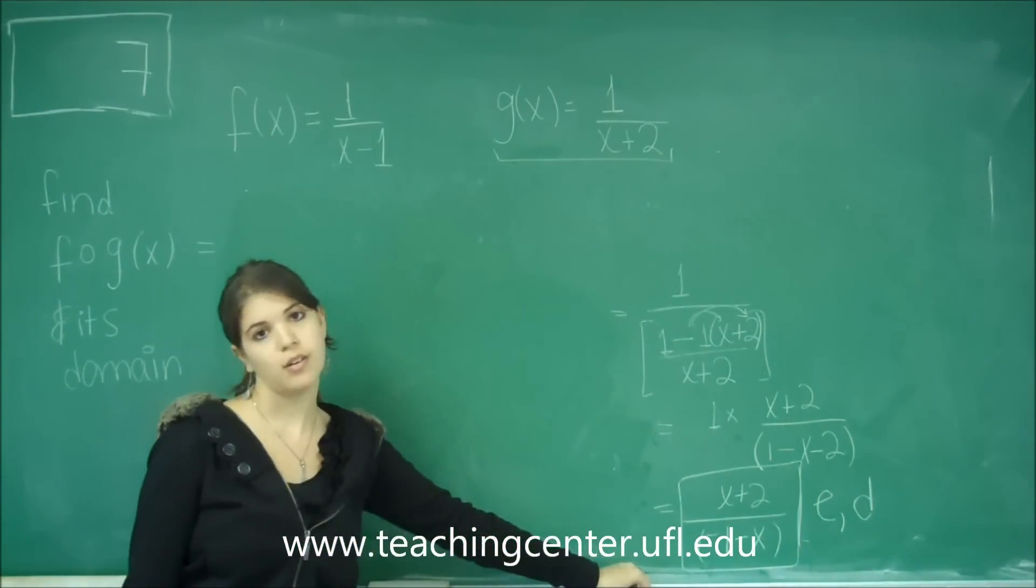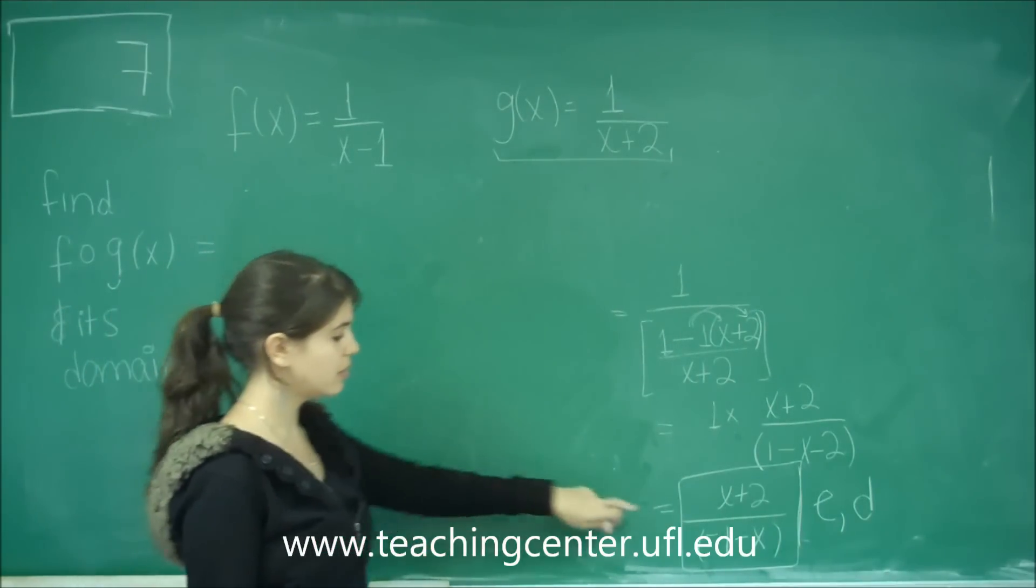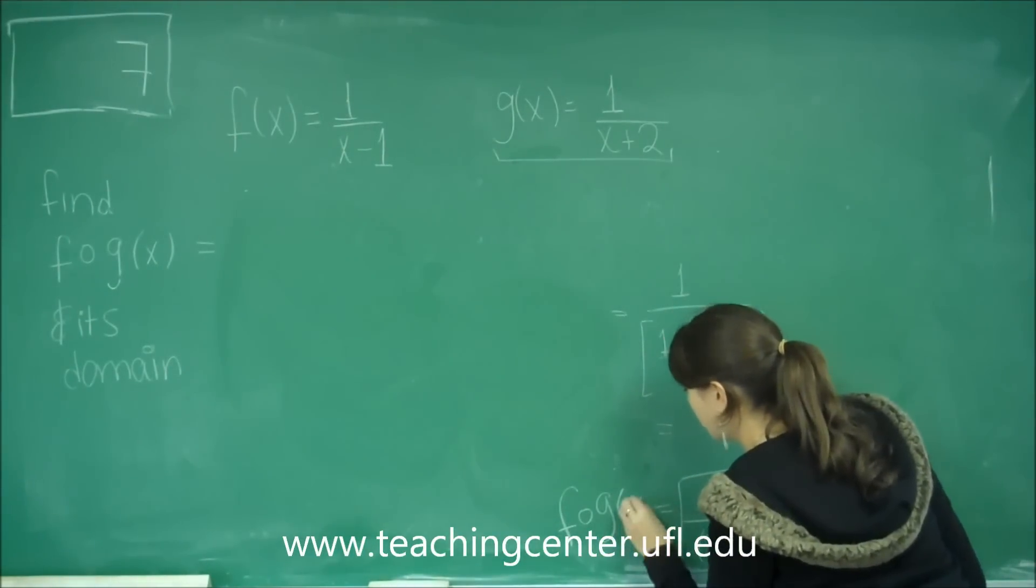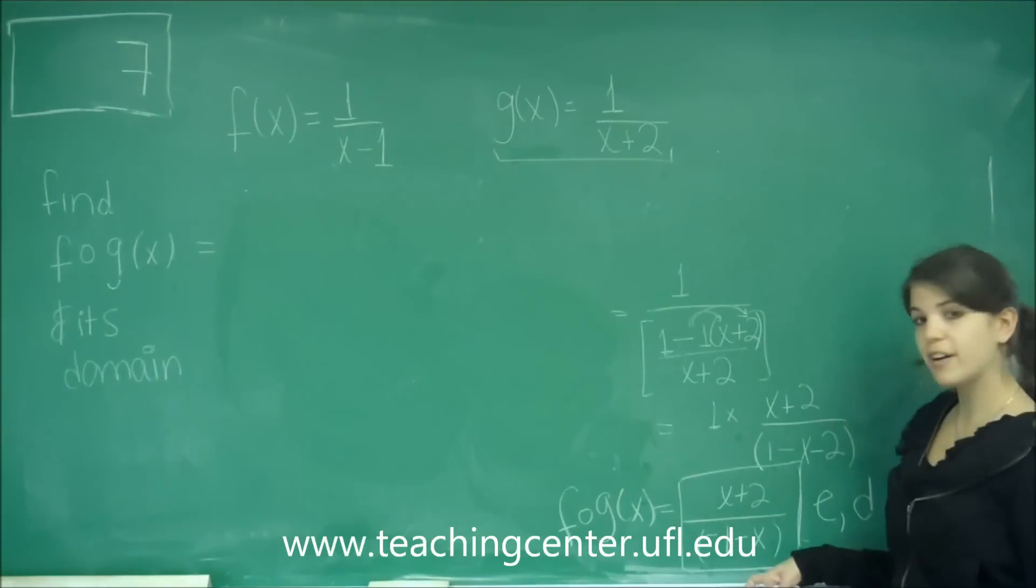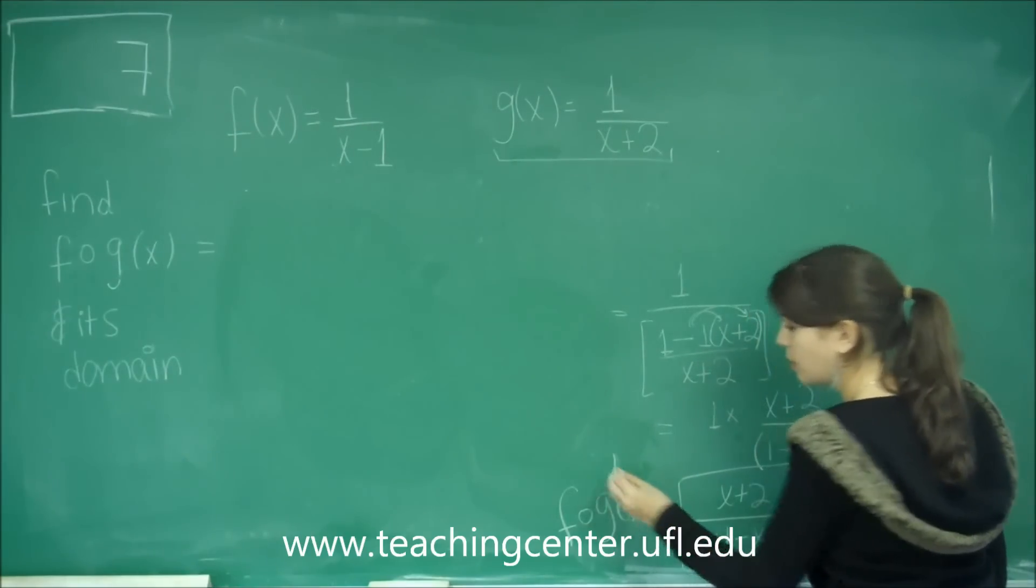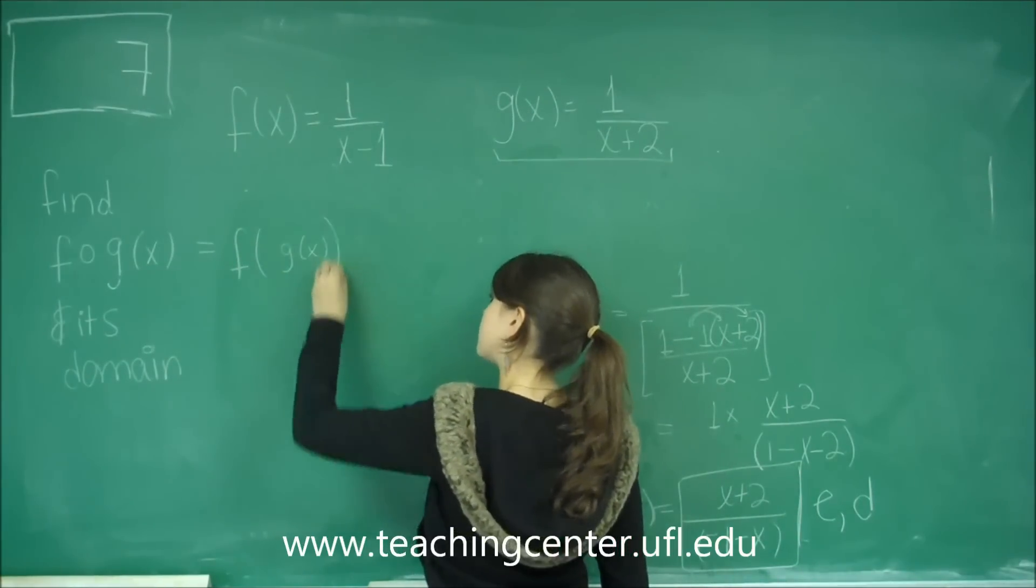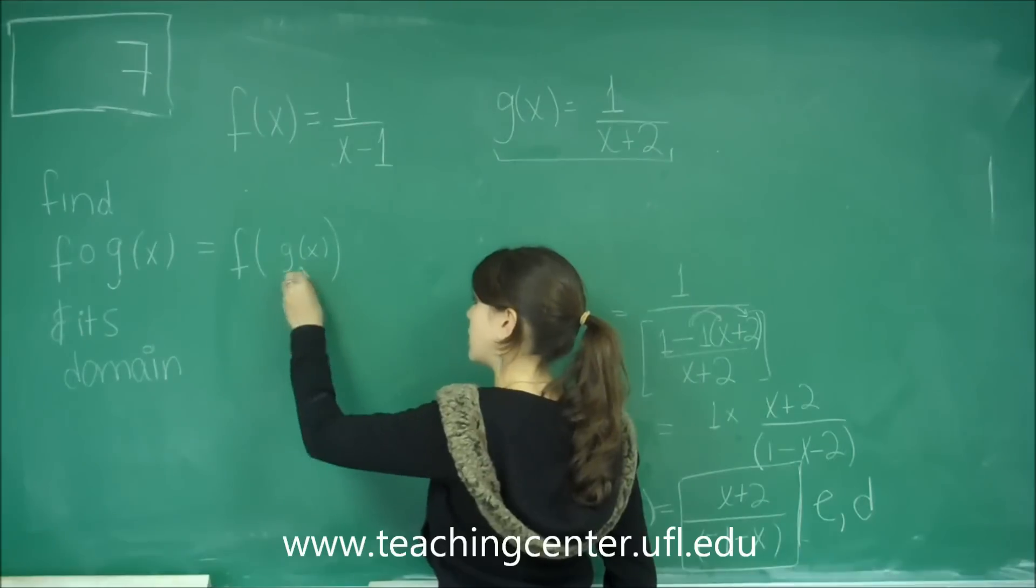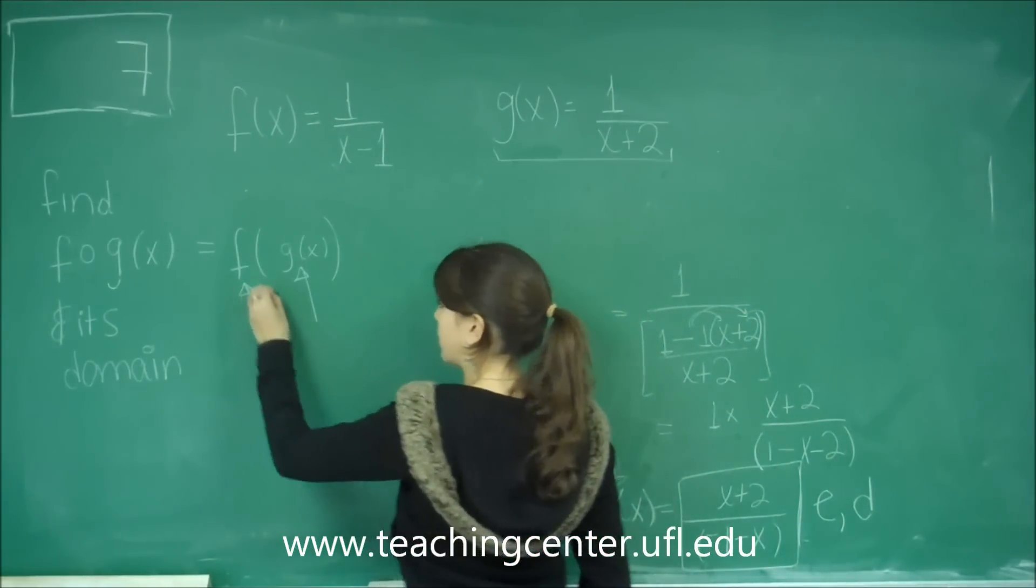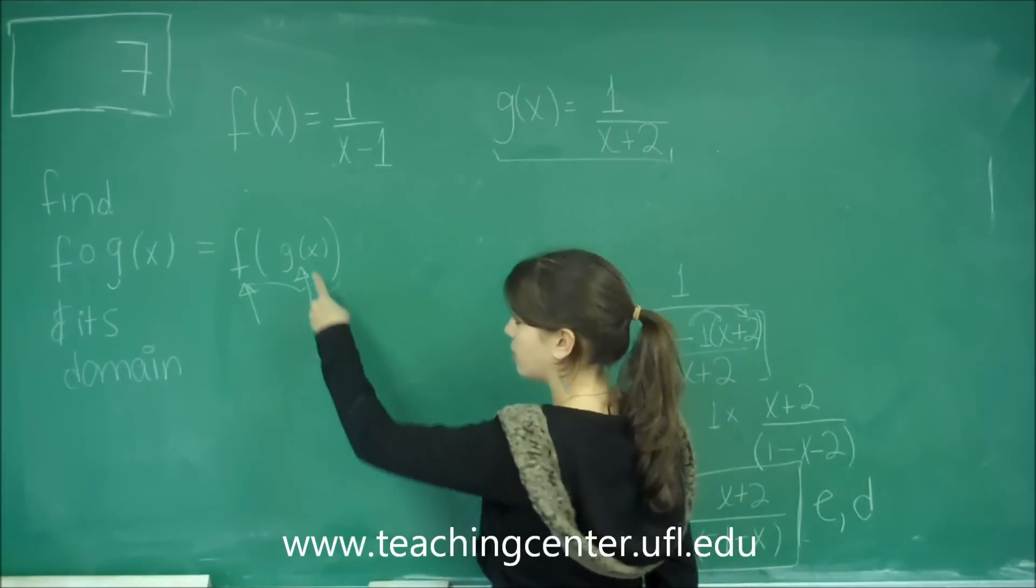The domain of something that looks like f of g of x is the domain of the final equation that we get. But also very important is that you consider the domain of the inner alone. You want the domain of the inner function alone and then combine that with the domain of the overall function with the inner function included.